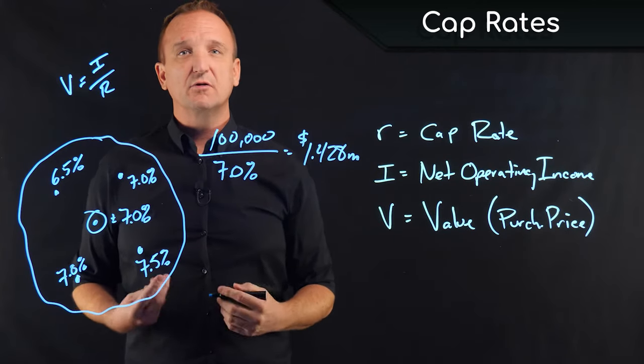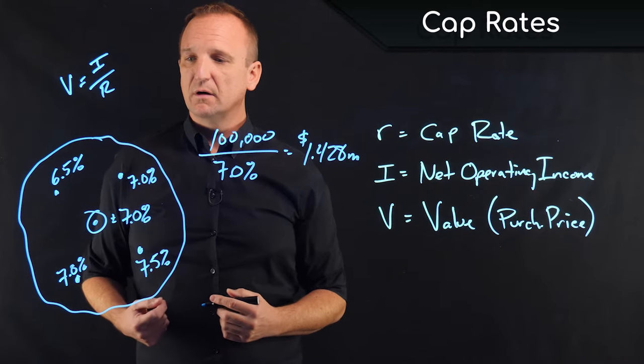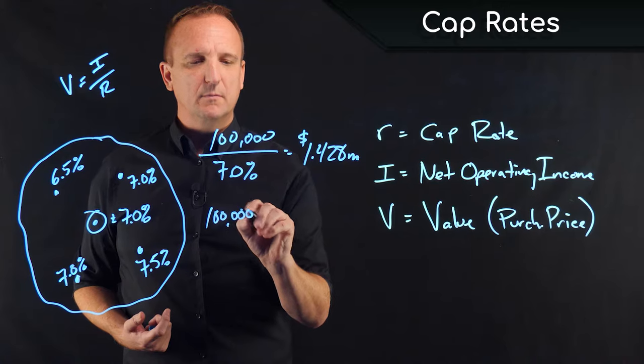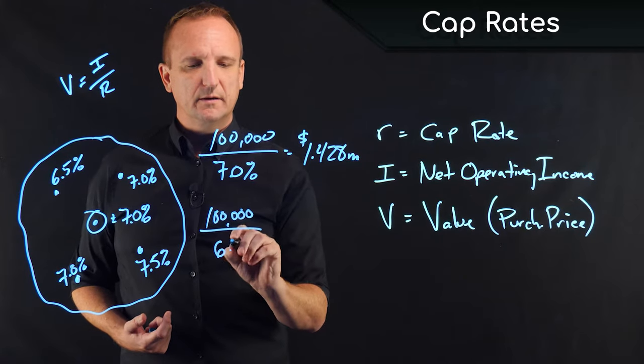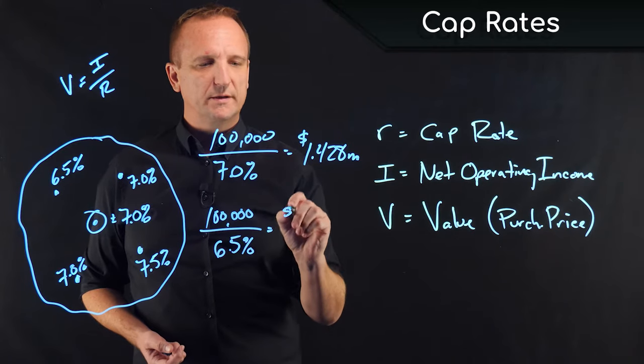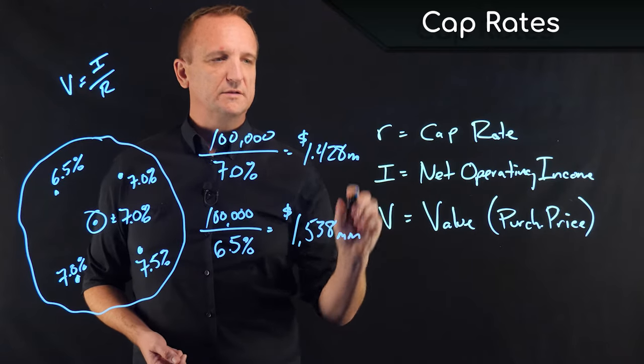Now, perhaps the seller thinks, hey, my property is comparable to the one that had a lower cap rate. And maybe they want to say, okay, we're going to take that $100,000, but I'm going to sell at a 6.5% cap. And then they would find that their property is worth $1,538,000.